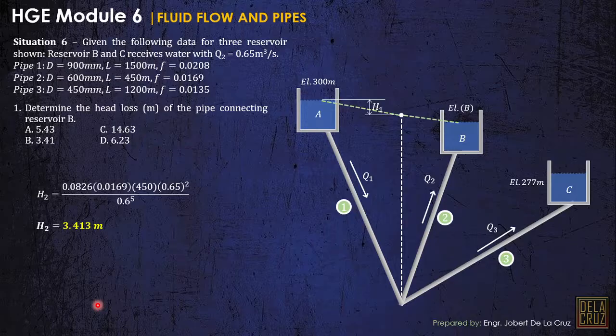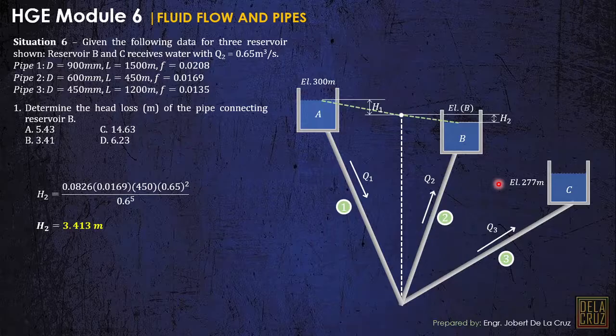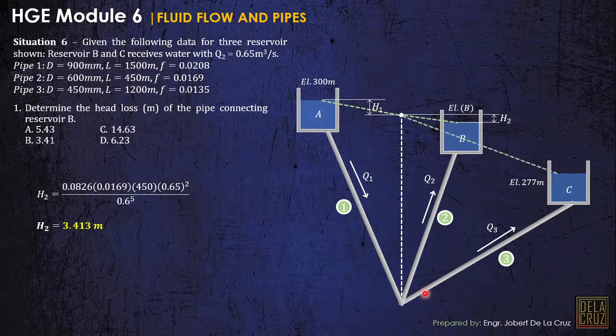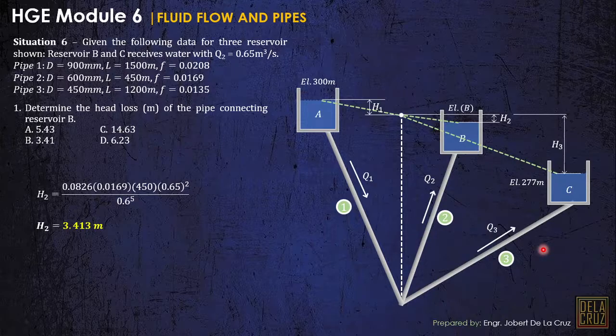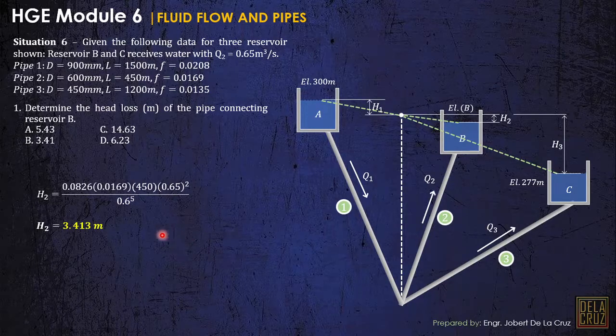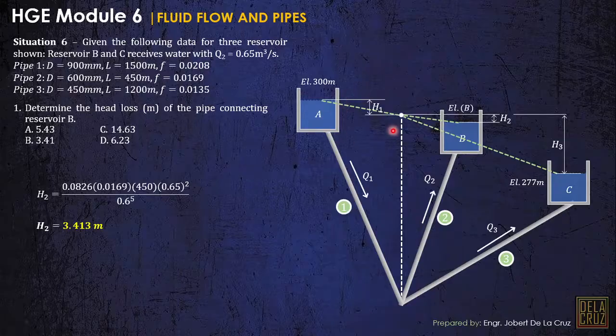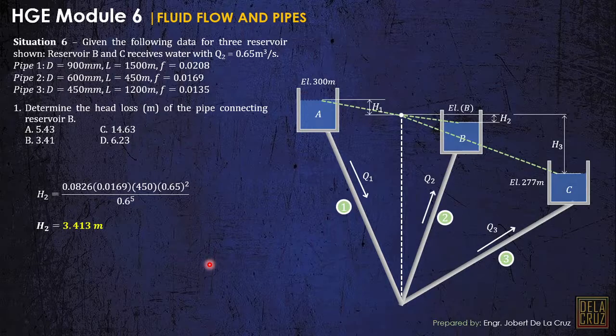So we have the head loss 2. So remember that head loss is measured vertically. That is the drop of the energy grade line. So from the junction point, this is our H sub 2, the head loss of 2. So also C receives water from reservoir A, so the energy grade line from the junction should be like this one. So from the junction point, this is our head loss 3 or the head loss on pipe 3.